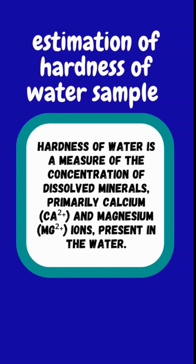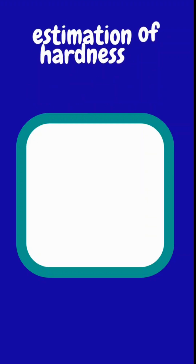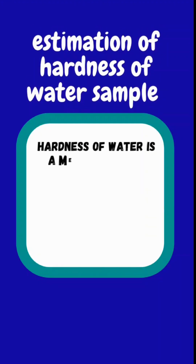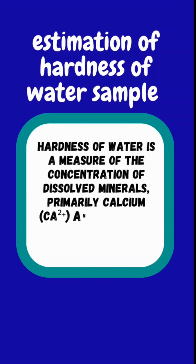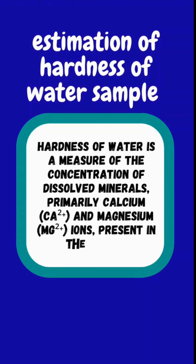Water hardness is an important parameter because it affects domestic use. Hard water can cause scaling in boilers, pipes and kettles, reducing their efficiency. In industries it is going to interfere with soap and detergent effectiveness and cause halting in the machinery. So it is very crucial to determine the hardness of water for domestic as well as industrial purposes.